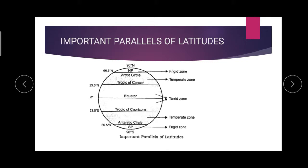Arctic Circle is at 66½° north. Antarctic Circle is at 66½° south.